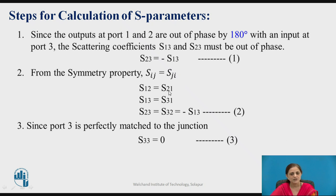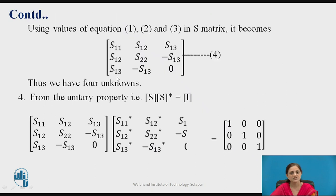The meaning of S13 is: input is applied to port 3 and output is taken at port 1, whereas S23 means input is applied to port 3 and output is taken at port 2. Since these are out of phase with each other, S23 can be written as negative of S13. Using the symmetry property Sij = Sji, we get S12 = S21, S13 = S31, S23 = S32, and from equation 1, S23 = -S13. Since port 3 is perfectly matched to the junction with no reflection, S33 = 0. Using equations 1, 2, and 3 in the matrix, we rewrite it as equation 4, leaving four unknown values: S11, S12, S13, and S22.